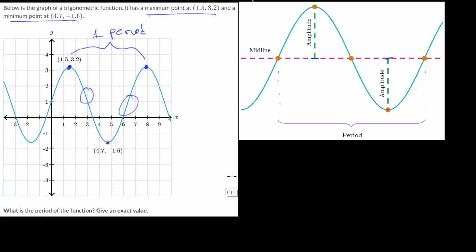So the distance from a maximum point to a minimum point, this horizontal distance here, this is one half of a period. So if we can figure out that horizontal distance, then we can figure out the total period by just doubling everything.